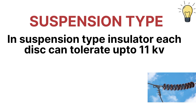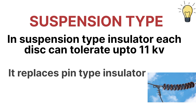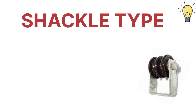The suspension type insulator — each disc of a suspension type can tolerate up to 11 kV. It replaces the pin type insulator at high voltage, so for high voltage applications we generally use this suspension type insulator.